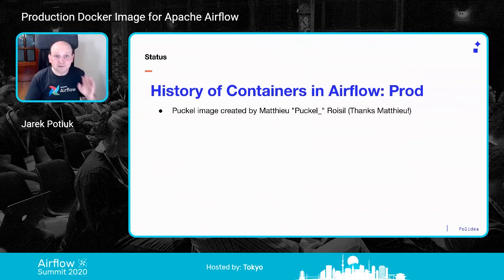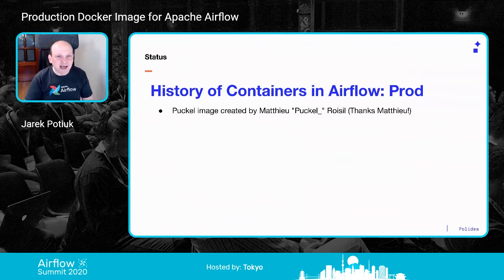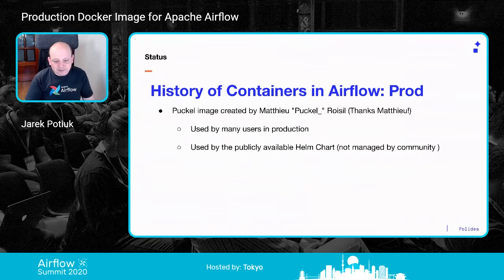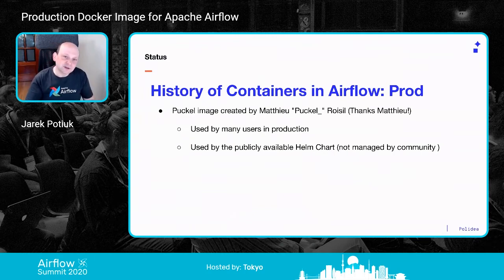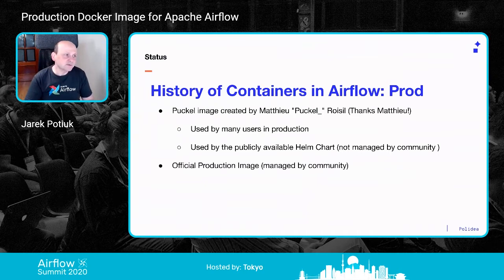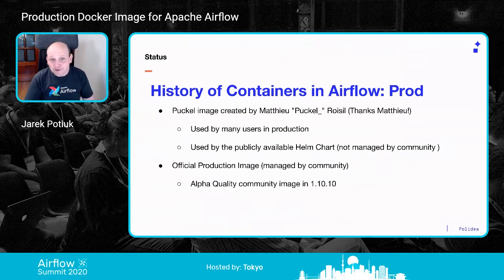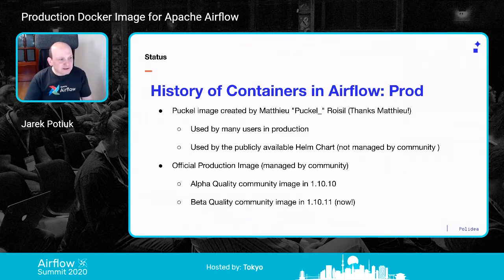For production, many people were using the image created by Matthieu Cukierman — thanks to Matthieu. For many years, that was the way to run Airflow in production. We're moving away from that; 1.10.9 is the last official version of that image. It was used by many users and by the publicly available Helm chart, which was managed by a few people not very active in the Airflow development community. We're also moving away from that Helm chart to the community-managed one.